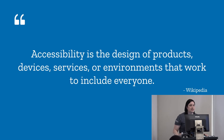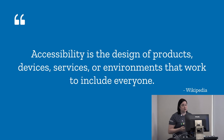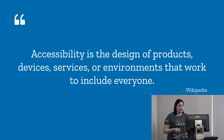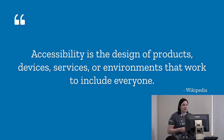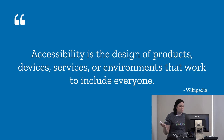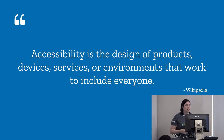You might have heard the term accessibility and understood it as enabling permanently disabled folks to access technology, but it actually has a much broader scope. According to Wikipedia — the source of all truth — accessibility is the design of products, devices, services, and environments that work to include everyone. This also includes folks with temporal or situational impairments, such as a broken arm or carrying something heavy, as well as age-related conditions.